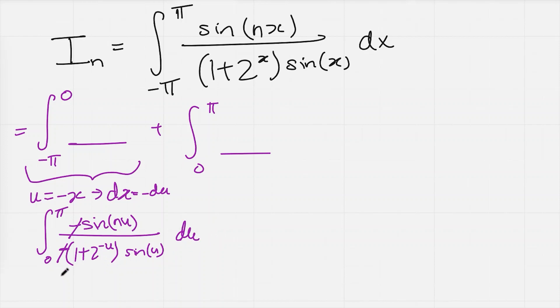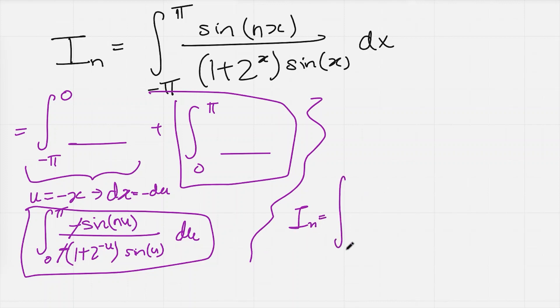So now I've got the integral from 0 to pi of sine of nu divided by 1 plus 2 to the minus u times sine of u du. And it looks very similar to what we began with. And in fact, now I have two integrals, this integral here and this integral here, which I'm adding up to give me i n. But these are both integrals from zero to pi, so I can actually combine them together and get the i n, therefore, is equal to the integral from 0 to pi of this integrand plus this integrand.